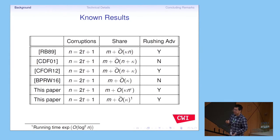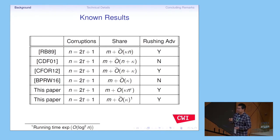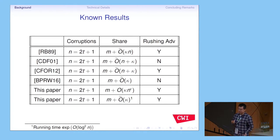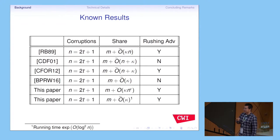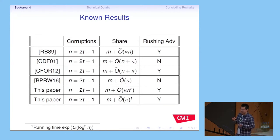We have two results. One result achieves optimal share size, but it is not running in polynomial time — it runs in super-polynomial time. Another result runs in polynomial time but is not optimal in share size, achieving some N to the epsilon, where epsilon can be any small constant. Comparing with the CFOR12 paper, they achieved O(N + kappa) share size under the Russian adversary — the same model — but their share size is much bigger, at the O(N) level.